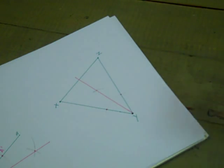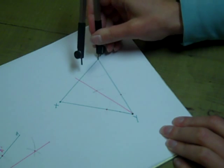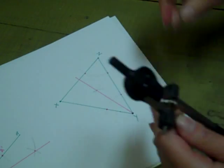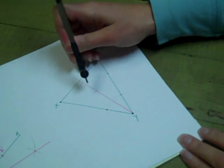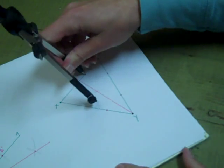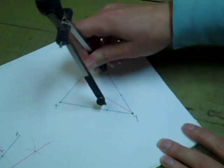I'm then going to bisect angle Z, put my pointer on it, make an arc, and I've created two new points. I can put my pointer on those points and make arcs. I'm going to make these arcs a little bit farther away so they don't intersect with my other arcs that I have. It's easier to keep track that way.